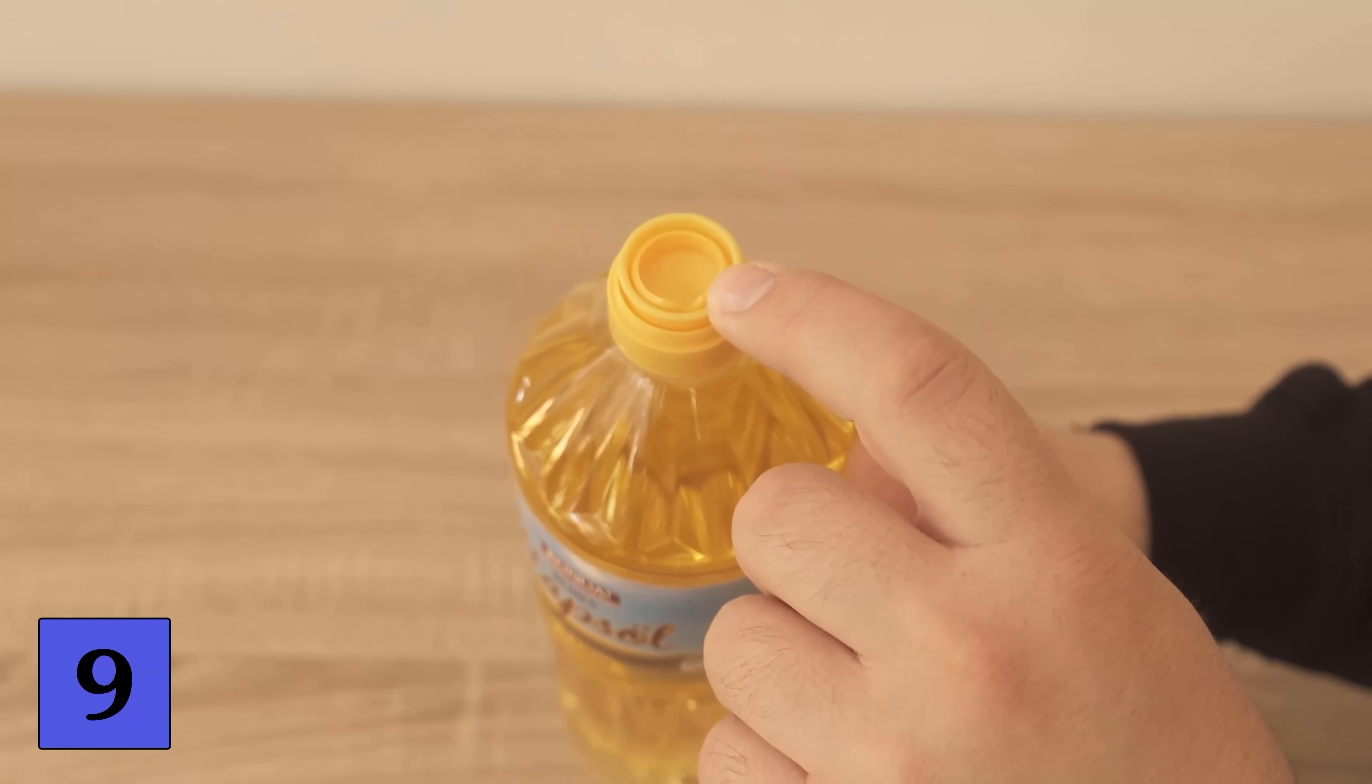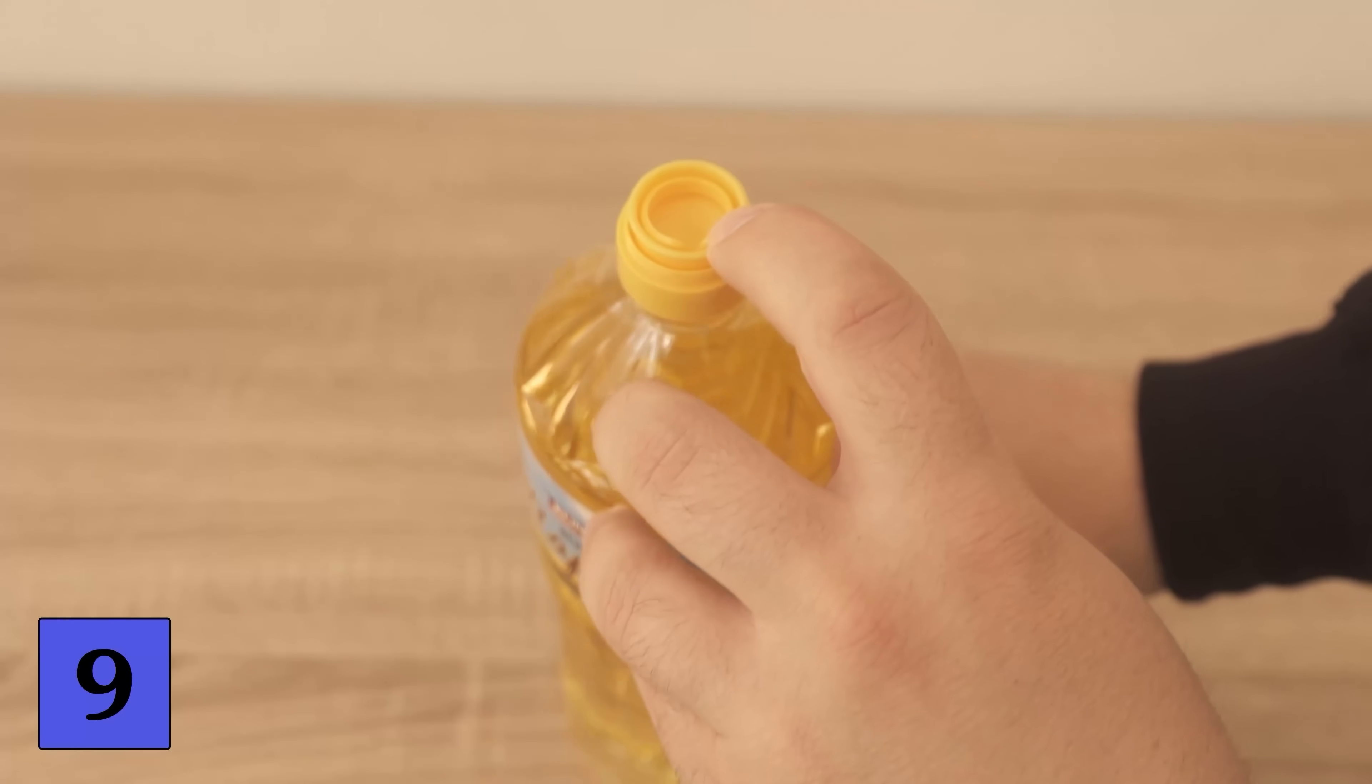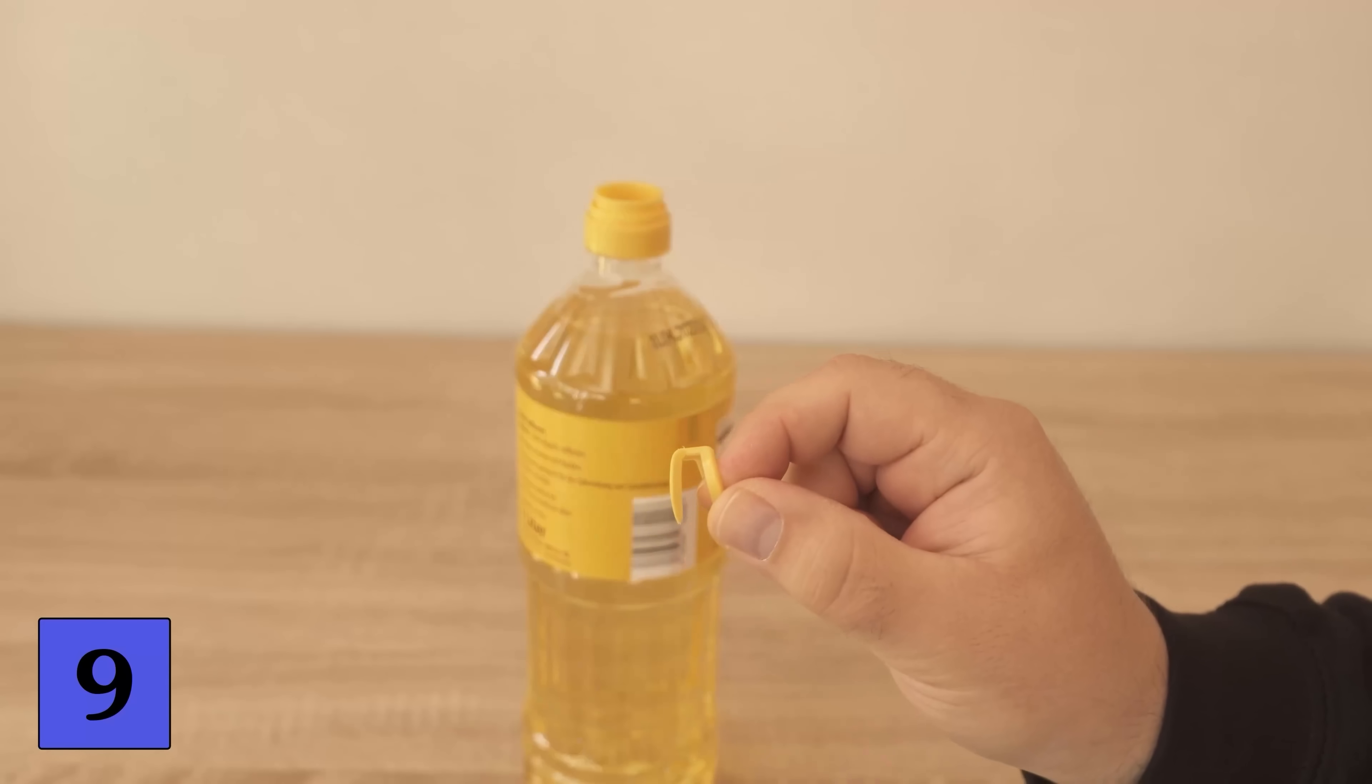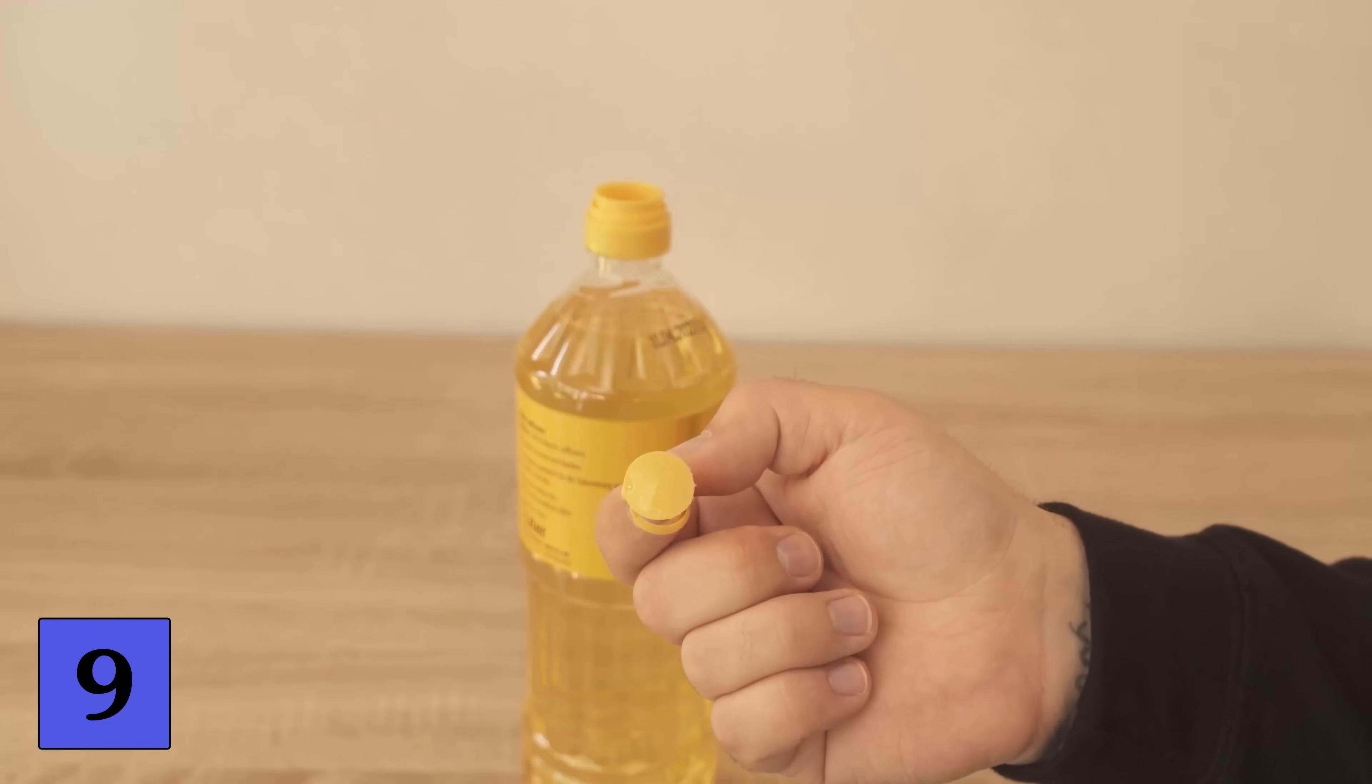Squeeze the handle where you pulled it out a little bit and now put this handle first into the oil bottle. You are basically just turning the whole thing around. The handle is pushed into the hole at the top and the other one slowly follows.